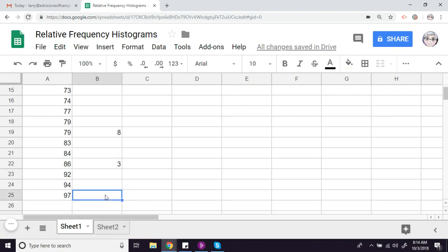And the 90s, also three. So that's the first step, or the first couple steps. I've sorted the data, and I've counted the number of members in each of these groups.